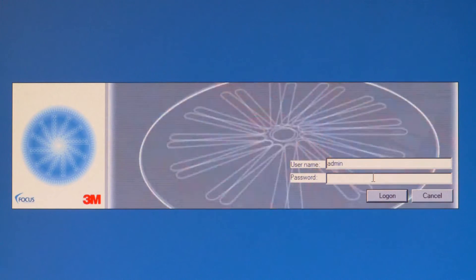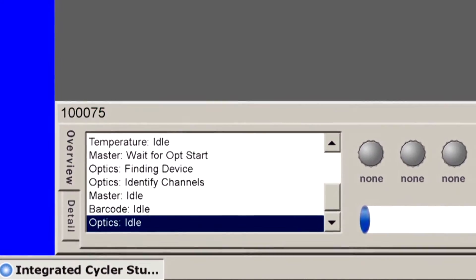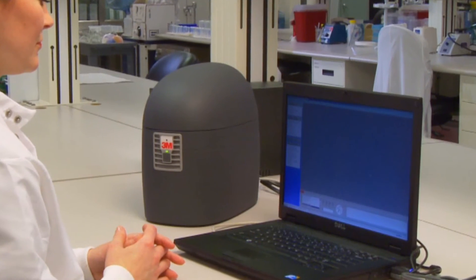Open the Integrated Cycler Studio software and log on. The software automatically runs a fast, thorough firmware inspection and the instrument is ready.